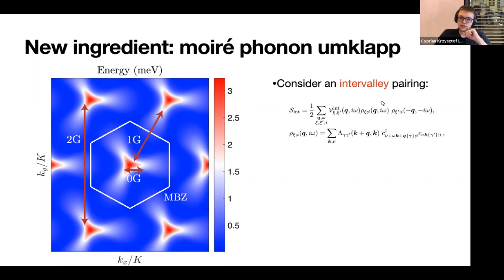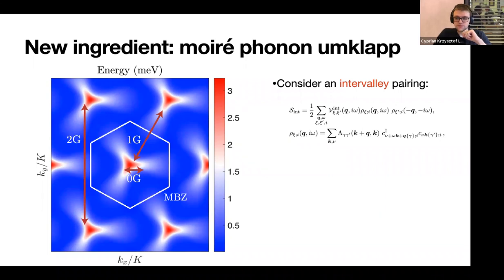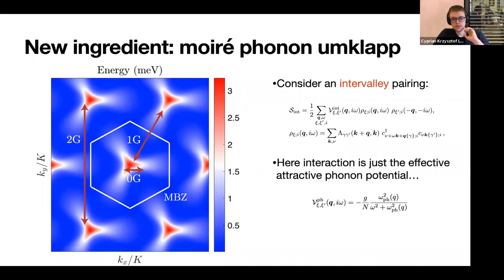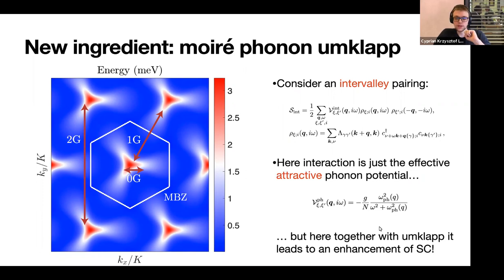We are considering intervalley pairing, and the weight coming from each umklapp process is contained in the overlap between Bloch wave functions in each of the two neighboring zones. An important fact for the plasmon mode discussion: the phononic channel is overall always attractive. But this phononic channel, combined with the umklapp processes, will lead to an enhancement of superconductivity. When we analyze the superconducting dome — calculated in the large-N limit with N equal to 20 — adding umklapp processes produces a massive enhancement of Tc.